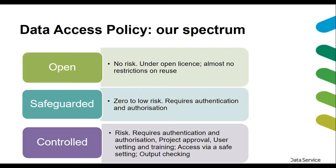Then you have the middle section of the spectrum, which is safeguarded data. This is where there might potentially be a risk of re-identification, but it is very, very low or even zero. This is data available under an end user licence or perhaps a special licence, so there's a little bit of paperwork — you need to have authentication and authorization. You might already be familiar with that process if you've worked with data through the UK Data Service before.